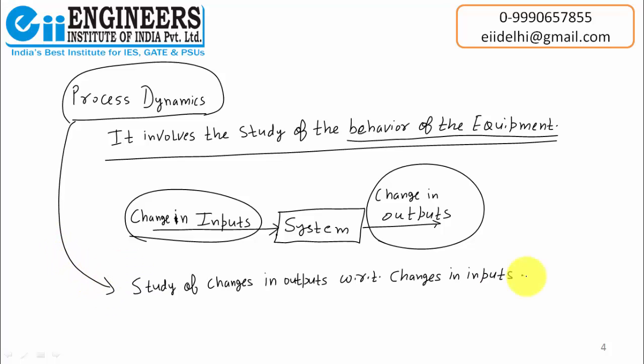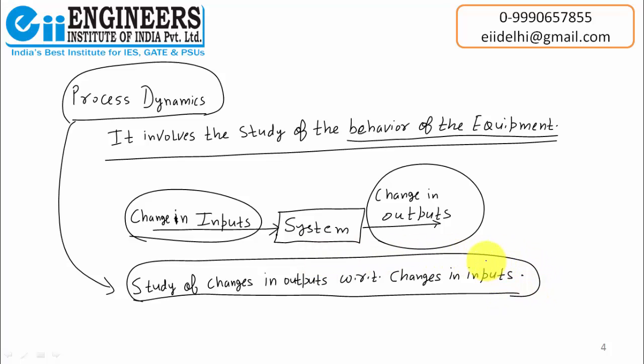To get a clue about the behavior, we need to change our inputs, which in turn changes the outputs, and the study of both is known as process dynamics. It is defined as the study of changes in outputs with respect to changes in inputs. This line is actually the definition of behavior. To calculate behavior: change your inputs, you will get a change in outputs, and from that you can determine the behavior of the equipment. That is the basic introduction about process dynamics.